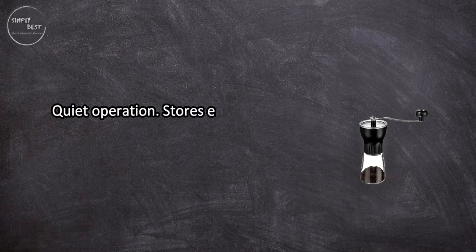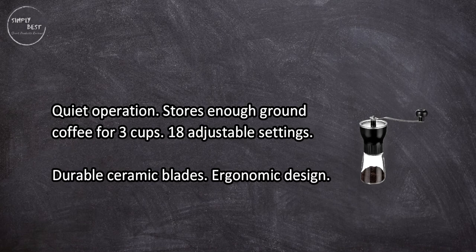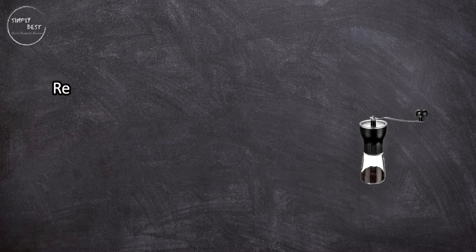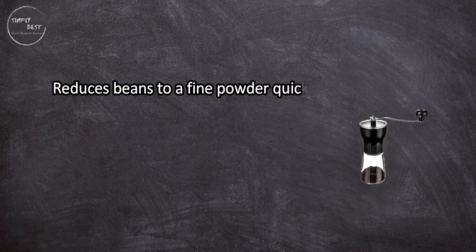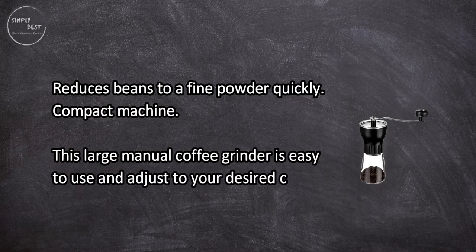Quiet operation, stores enough ground coffee for three cups, 18 adjustable settings, durable ceramic blades, ergonomic design reduces beans to a fine powder quickly. Compact machine, this large manual coffee grinder is easy to use and adjust to your desired coffee texture.